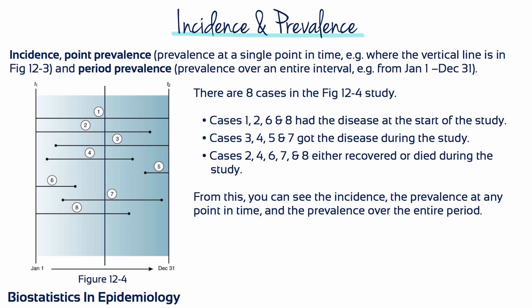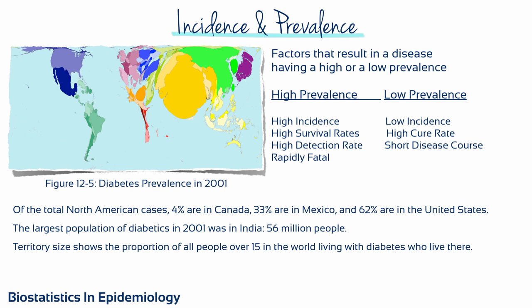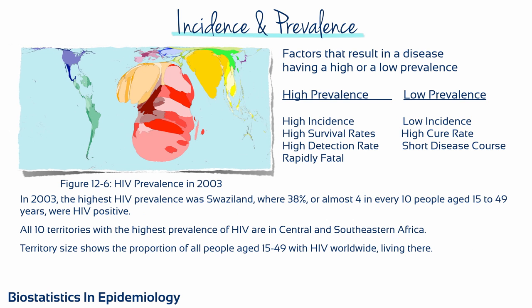Case number five is only a prevalent case at the end of the study. Incident rates and prevalence rates are both measures of morbidity. A number of factors contribute to specific diseases having high or low prevalence. Here is an example of diabetes prevalence and another of HIV prevalence.